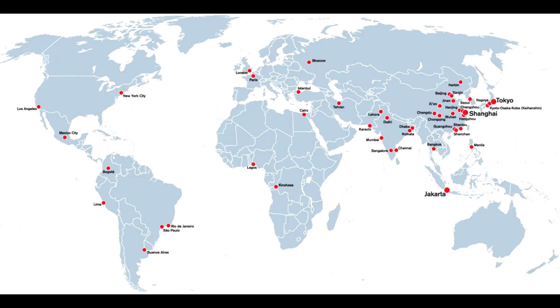This continued increase of urbanisation around the world has led to the growth of megacities. A megacity is defined as a city that contains more than 10 million people. In 1975 there were just four megacities; today that has risen to over 20. London is not actually classed as a megacity because it does not have a population of over 10 million people.